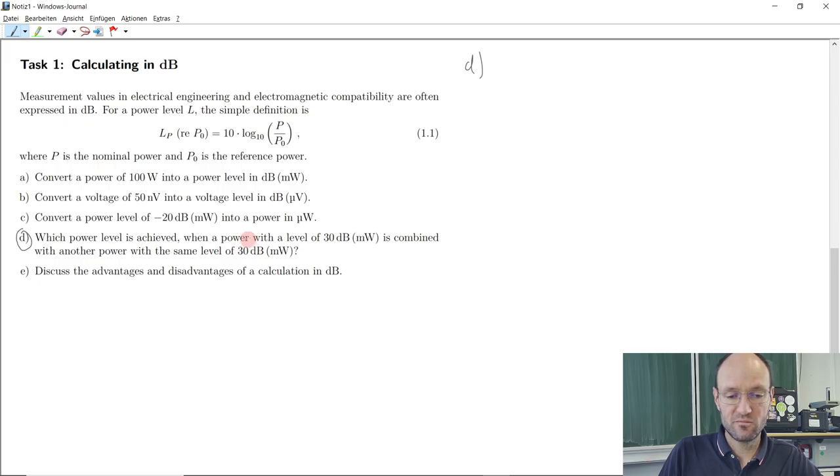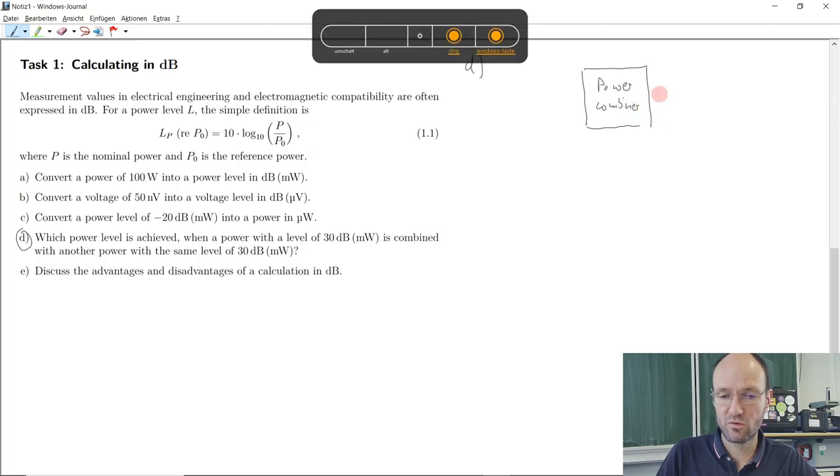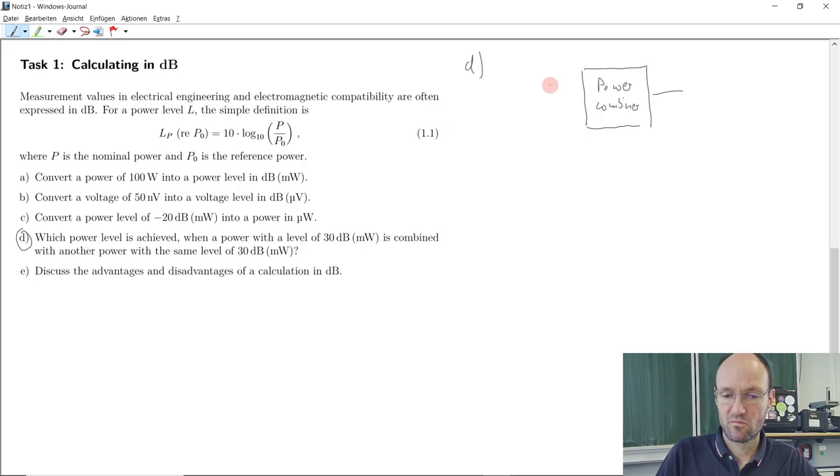We have a power with a level of 30 dBm and we have another power with the very same level of 30 dBm and now we have something like a power combiner, such a box where we have two inputs and one output. So P in 1, P in 2 and we have P out. And this power combiner somehow takes care that the output is this power plus this power. So here this should just be the sum of the two. But this power is given as a level, this power is given as a level, both are 30 dBm. So what do we do?